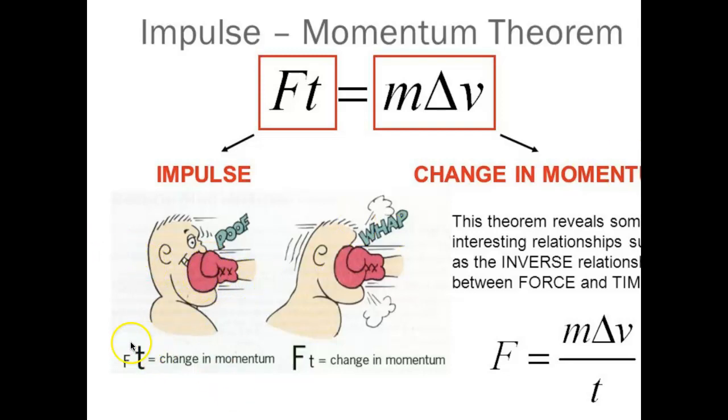so in order to extend the time when the punch hits the face, the boxer moves with the hand, extending that time and reducing the force of impact. Not a big fan of boxing to be honest,